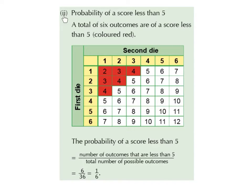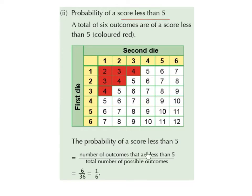Part 2: the probability of a score less than 5. There is a total of 6 outcomes that are a score less than 5, coloured in red: 2, 3, 3, 4, 4, and 4 — that makes 6 in total. So the probability of a score less than 5 is 6 divided by the total number of possible outcomes, which is 36, and 6 over 36 is a sixth.